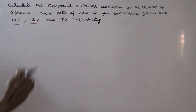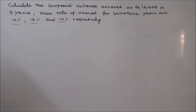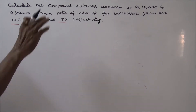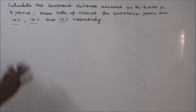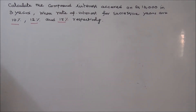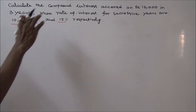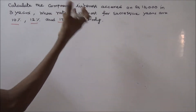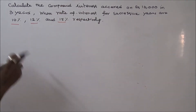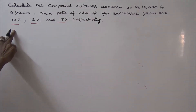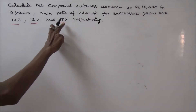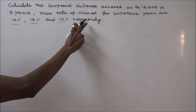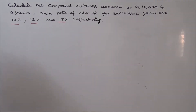Calculate the compound interest accrued on Rs. 16,000 in 3 years, when the rate of interest for successive years are 10%, 12%, and 15% respectively.